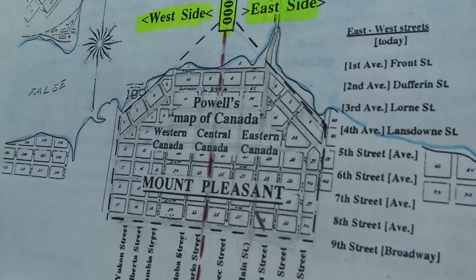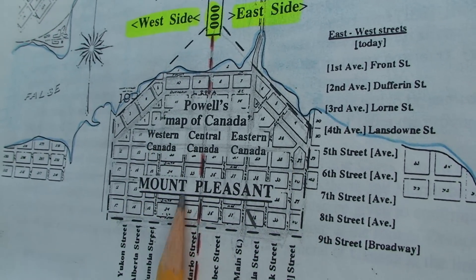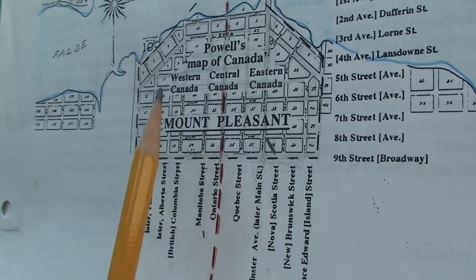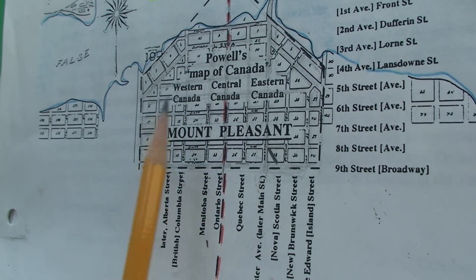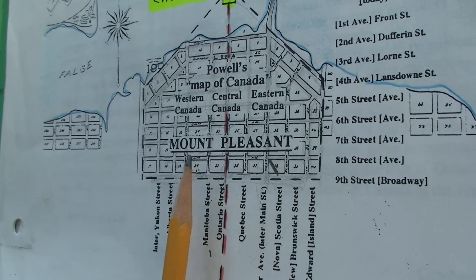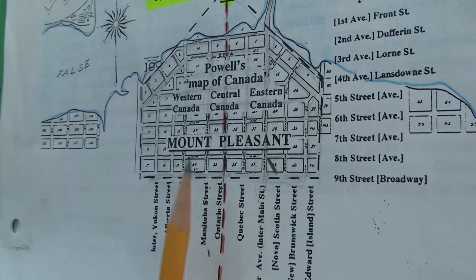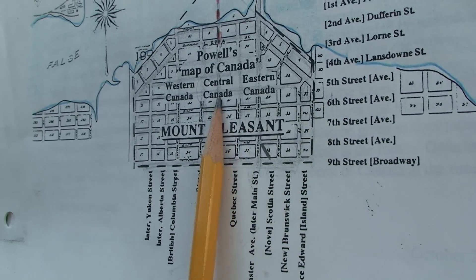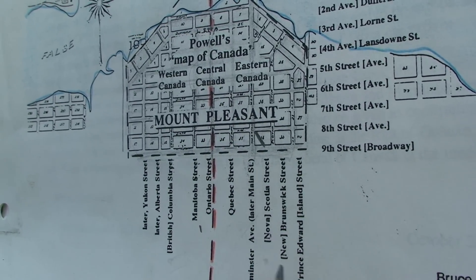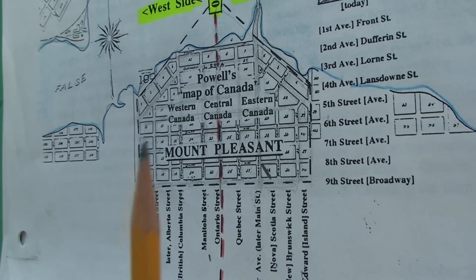The fellow that designed this street system was Israel Powell, and he did it as a map of Canada, with Ontario Street in the middle representing central Canada. All the streets west of Ontario Street were the provinces west of Ontario — Manitoba, British Columbia, and now Alberta Street as well. Going east of Ontario, you have Quebec Street, Scotia Street, New Brunswick Street, and Prince Edward Island Street. So it is a map of Canada.